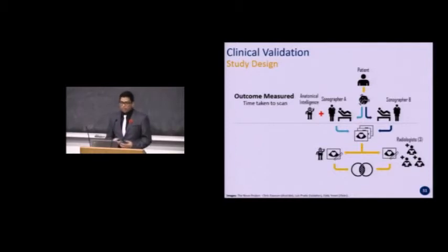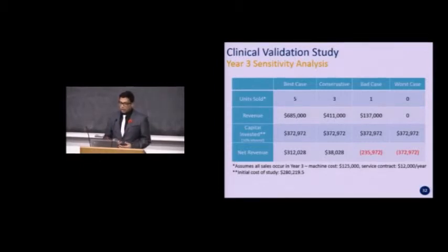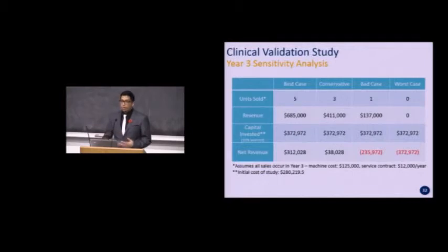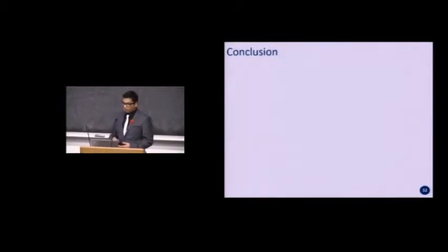The outcome measured in the second part is the accuracy of measurements. For cost-benefit analysis, we estimate the study to cost around $280,000. This is a year-three sensitivity analysis, since the requisition process in the Canadian healthcare system takes about two years from start to finish to acquire a medical device such as a CT scanner or ultrasound. It will take about three ultrasound systems for Philips to generate a positive net revenue.